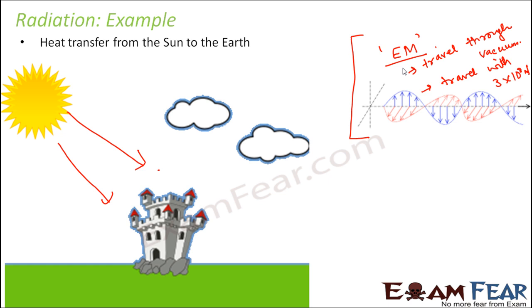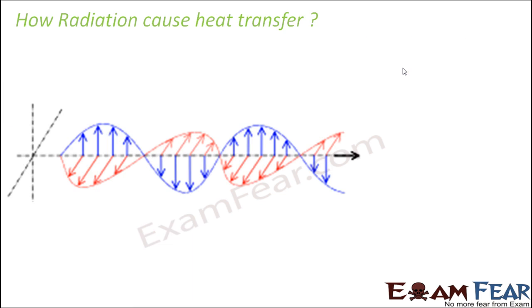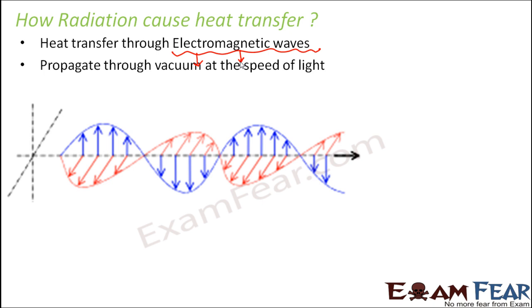The heat transfer from the sun to the earth is a classic example of radiation. How exactly does radiation cause heat transfer? It transfers through electromagnetic waves. The name itself tells that it involves both electric field as well as magnetic field. It propagates through vacuum at the speed of light. These are the properties of electromagnetic waves - they can travel through vacuum and travel at the speed of light, that is 3 into 10 to the power 8 meter per second.